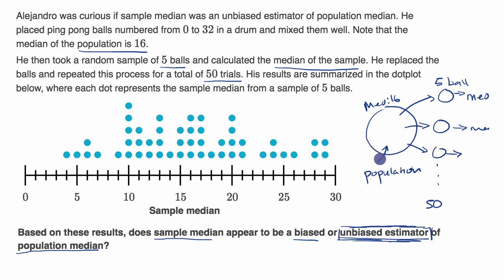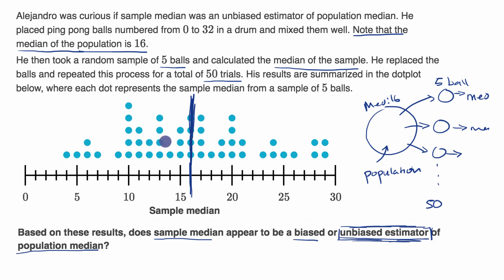In this situation, the true parameter for the population — they note that the median of the population is 16. That's the thing we're trying to estimate. So if we look at the sampling distribution, we see that it is roughly balanced to the left and to the right of that true parameter. I would say this is looking pretty unbiased because the sampling distribution is evenly balanced to the left and the right of the true median of the population.